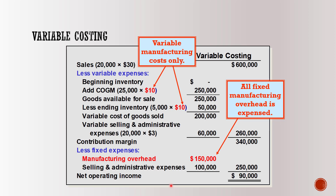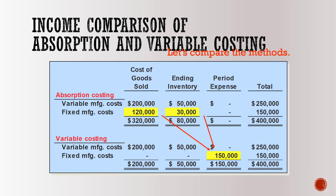Now let's compare the two income figures. Under absorption costing, $30,000 of fixed manufacturing cost is included in the cost of goods sold and ending inventory — specifically, $30,000 is deferred in ending inventory. Under variable costing, the entire $150,000 fixed manufacturing cost is expensed in the period and there is no fixed manufacturing cost in cost of goods sold or ending inventory. This is the basic difference between absorption and variable costing.